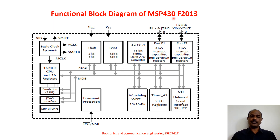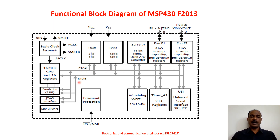In this MSP430F2013, there are two ports: port P1 and port P2. Port P1 has 8 pins, whereas port P2 has only two pins — P2.6 and P2.7. The 16-bit CPU processor uses the memory address bus (MAB), where addresses are placed between different memories and peripherals, and the memory data bus (MDB), where data is transferred between the processor and the various memories and peripherals inside the MSP430F2013.